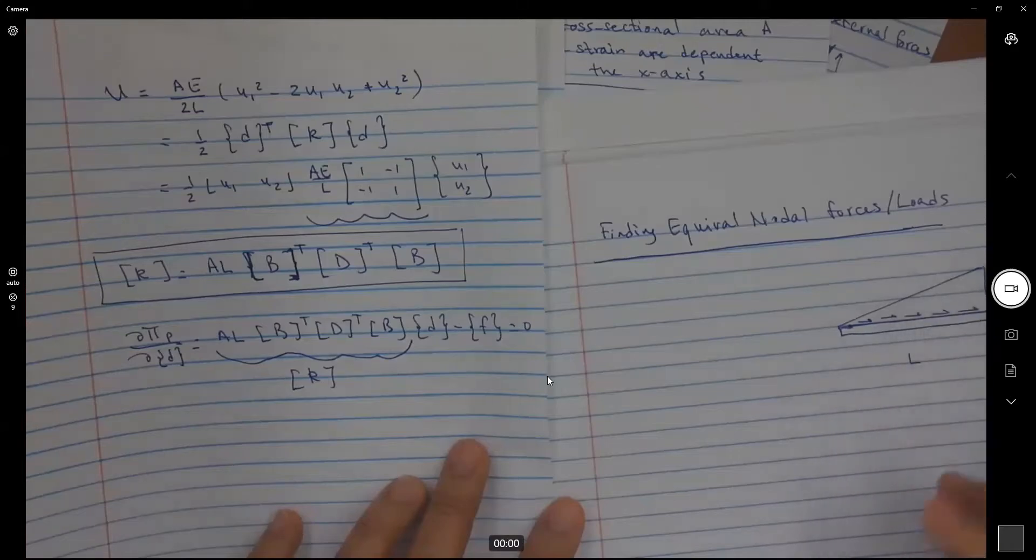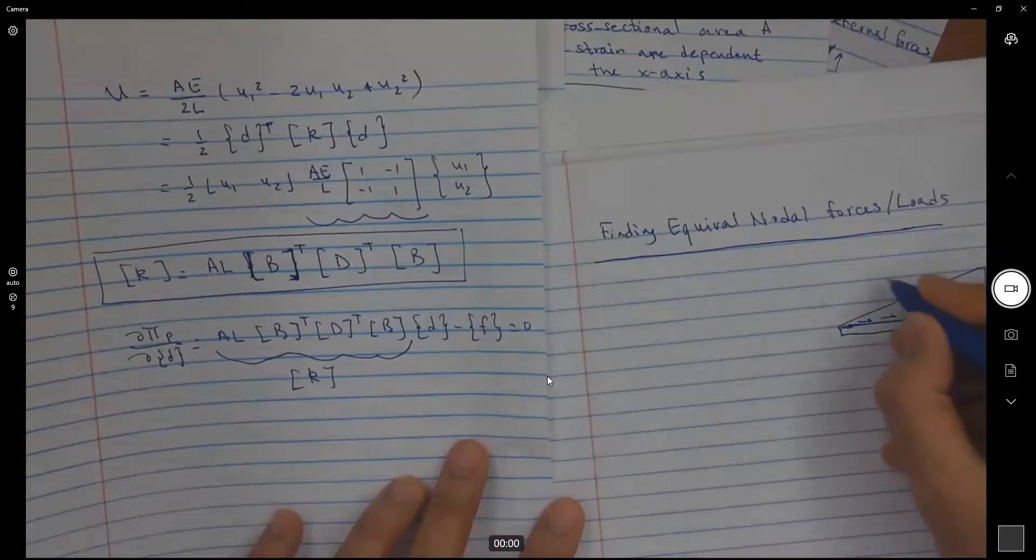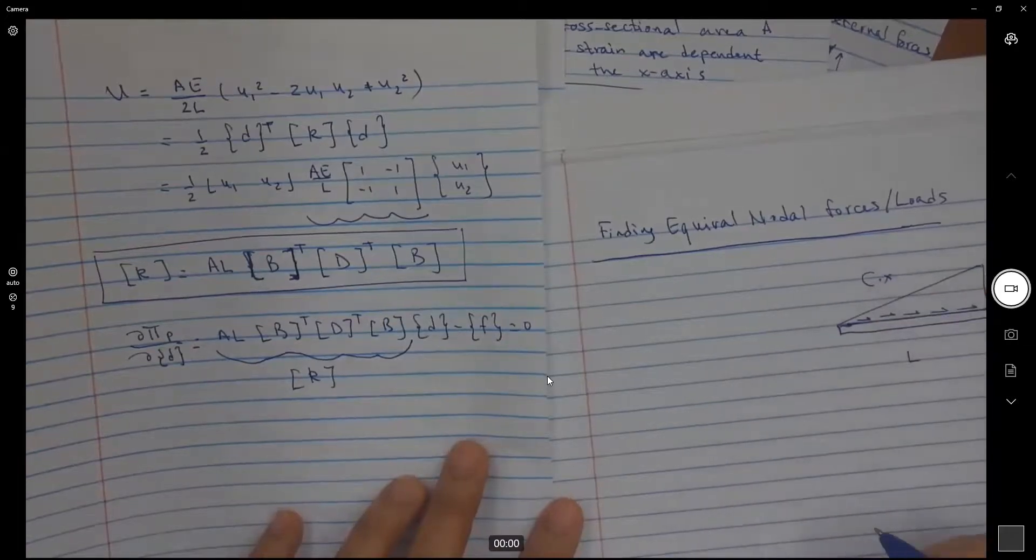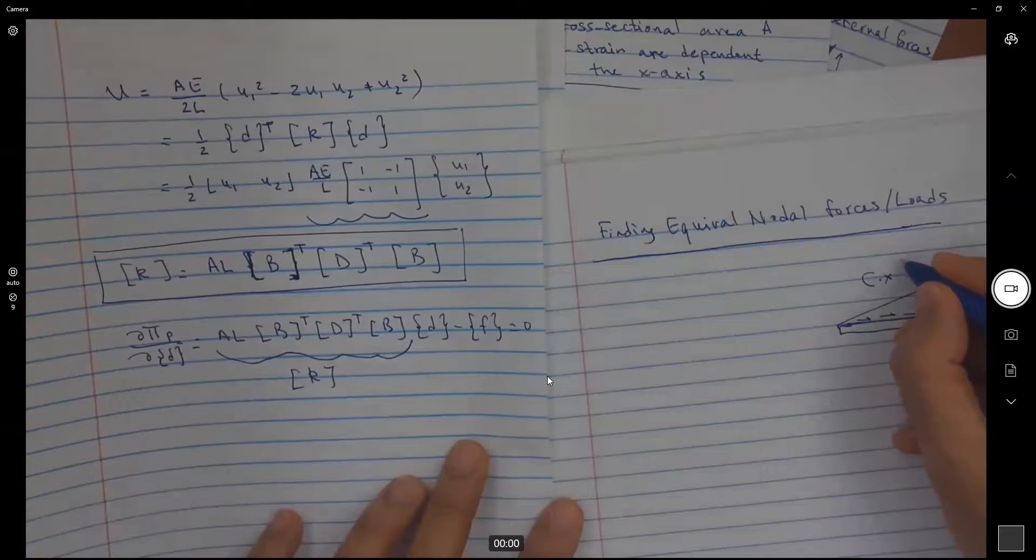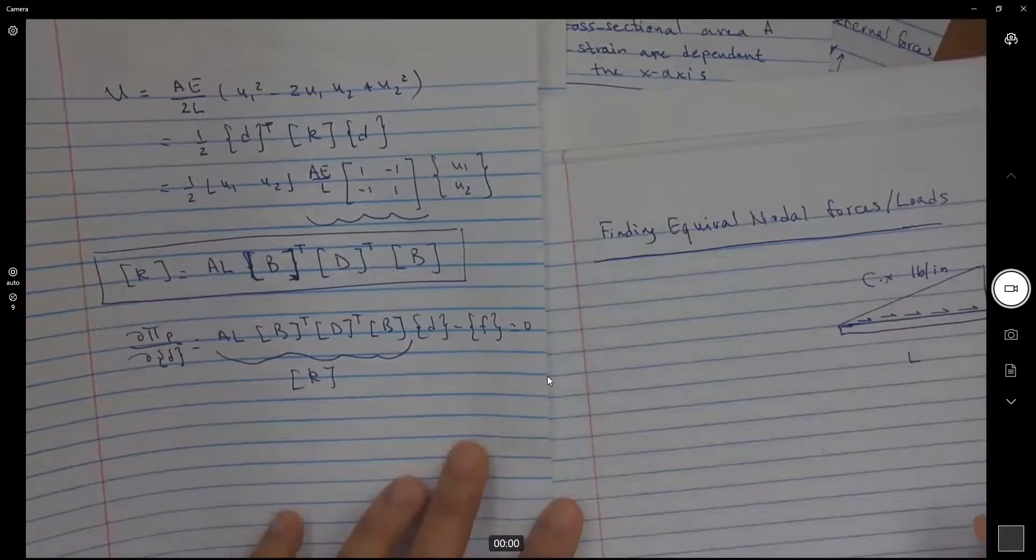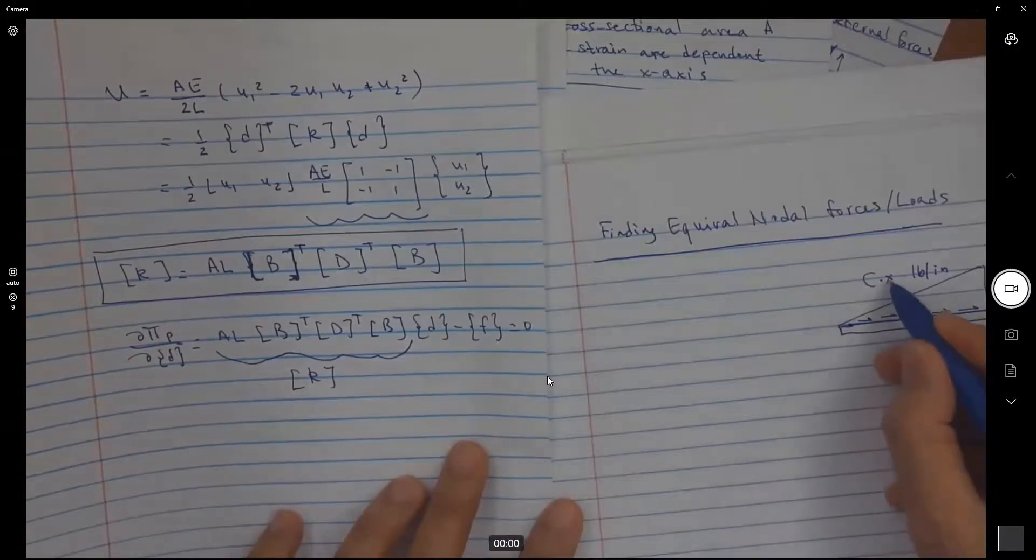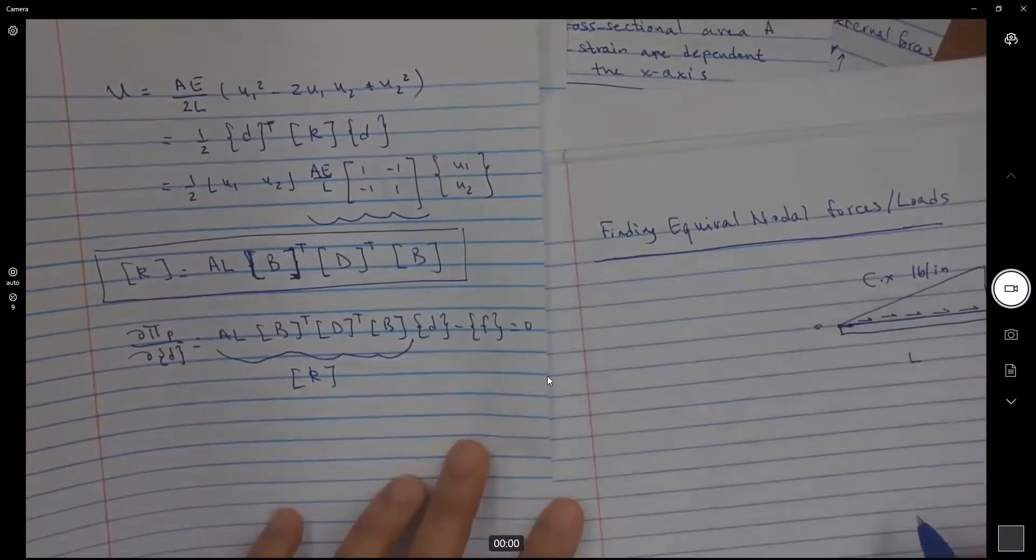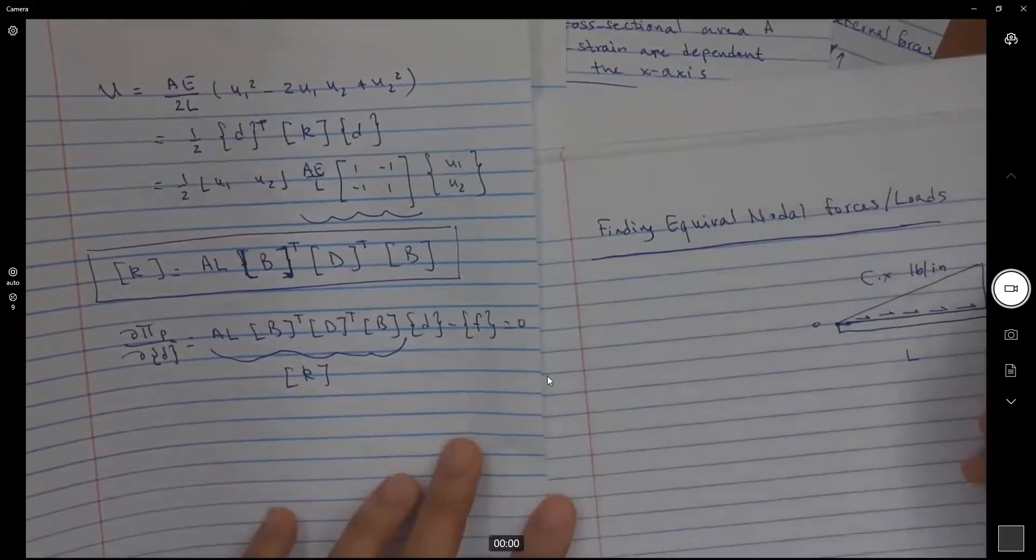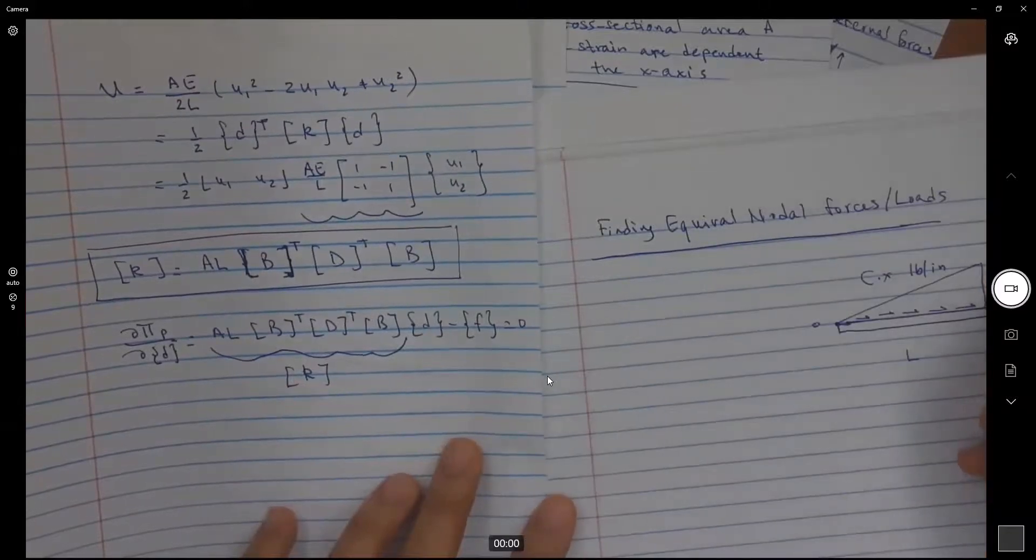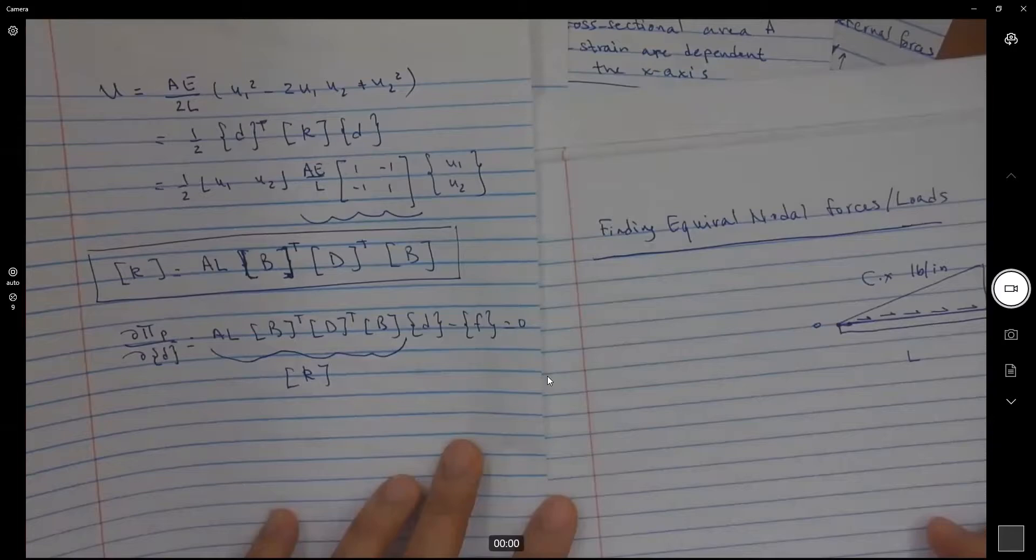This is just to represent the function. If this function is given by c times x, where c is a constant, and because it is linear, it's a distributed load, it's going to be expressed as pounds per inch. At x equals 0, this is 0. At x equals L, I'm going to get cL.